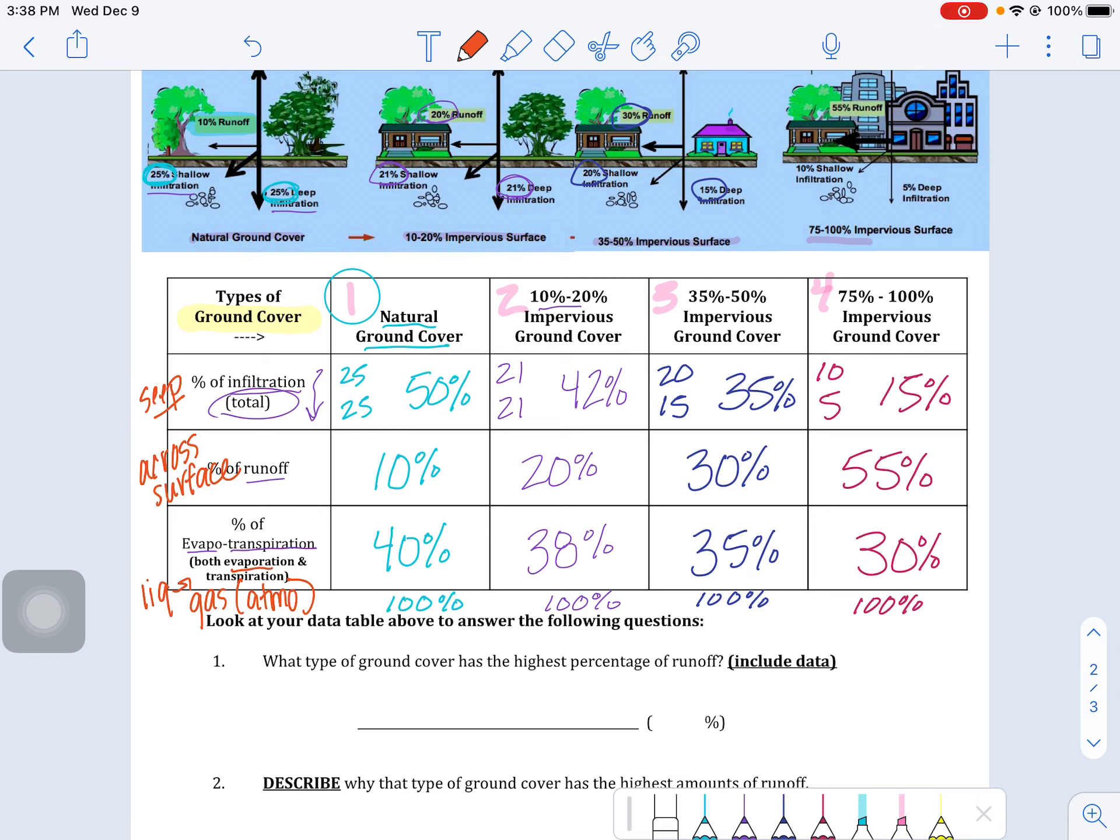Either from the earth's surface if it's evaporating or from the leaves of plants if it's transpiring. So what we want to view is how are these changing within the different ground covers. So again, natural was completely natural, just soil, grass, some vegetation.